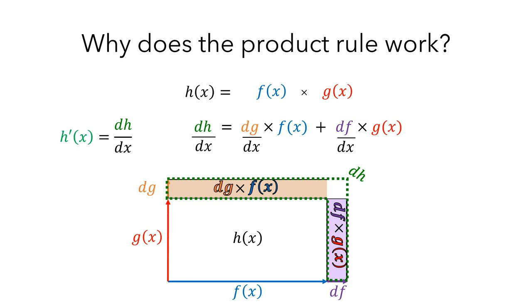And then we have dh dx, dg dx, and df dx, which are each derivatives. So we can rewrite this as the derivative of h is equal to the derivative of g times f plus the derivative of f times g.